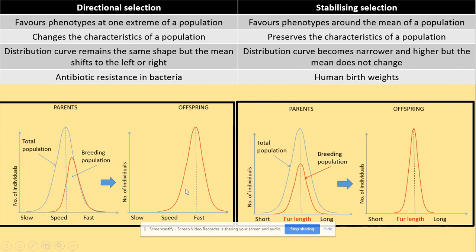At the end there will be a change to the characteristics of the population because the distribution curve remains the same shape as before, but the mean shifts to the left or to the right. So the shape stays the same but it shifts to one side. An example of directional selection is antibiotic resistance in bacteria.